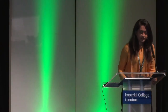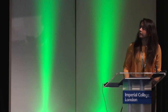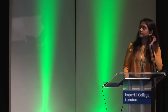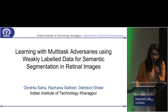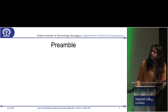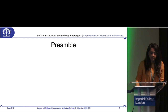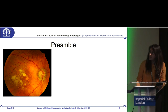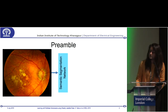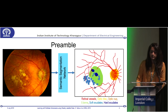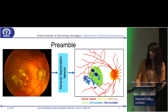Hi, I'm Ohindrila and I'll be presenting my paper on learning with multitask adversaries using weakly labeled data for semantic segmentation in retinal images. Our main aim in this work is that given a retinal fundus image, we should be able to segment out all the pathologies and anatomies of the retinal image using a single segmentation network in an end-to-end manner.